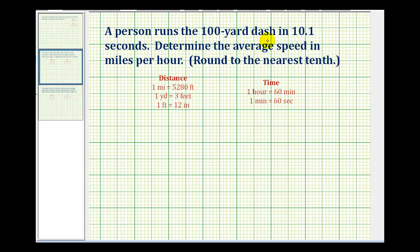A person runs the 100-yard dash in 10.1 seconds. Determine the average speed in miles per hour.